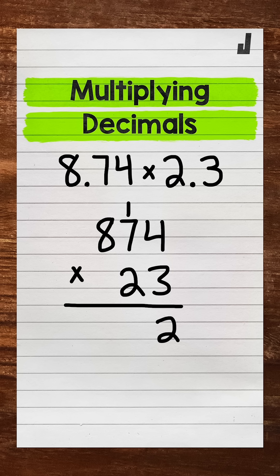Then we have 3 times 7, which is 21, plus 1 is 22. And then we have 3 times 8, which is 24, plus 2 is 26.